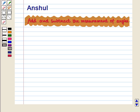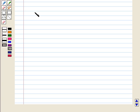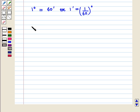In our earlier session we discussed degree-minute-second measure and decimal degree measure of angles. Let us now recall the relation between degree, minute, and second. 1 degree is equal to 60 minutes, or 1 minute is equal to 1/60 degree. And 1 minute is equal to 60 seconds, or 1 second is equal to 1/60 minute.